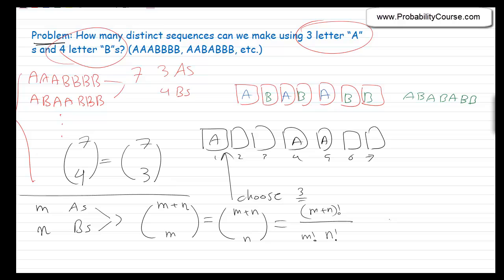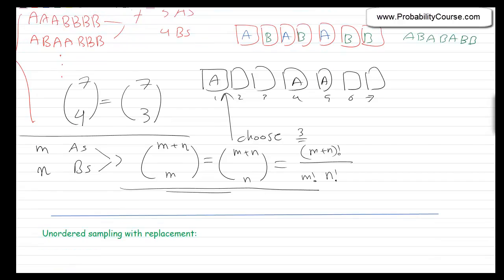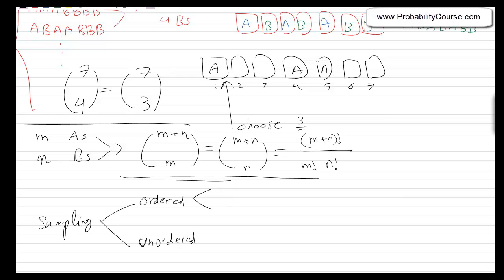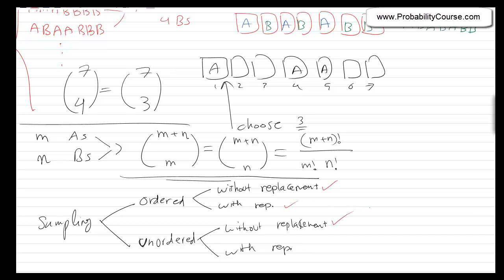We will come back to this problem. But now I want to continue our discussion on sampling. If you remember, we said that when we are sampling from a set — choosing elements from the set — there are four possibilities. Sampling could be either ordered or unordered, and also it could be without replacement or with replacement. So far we have discussed three cases in previous videos, and now we want to talk about the last one, which is unordered sampling with replacement.